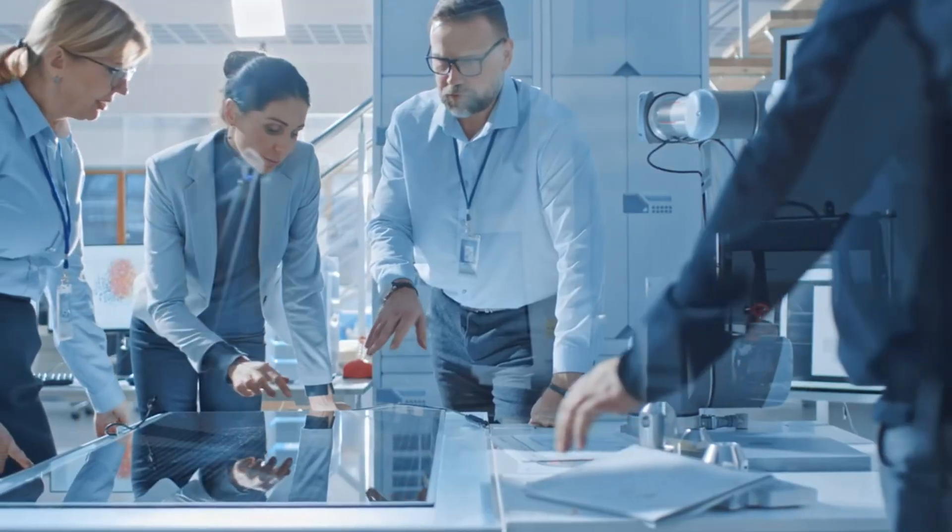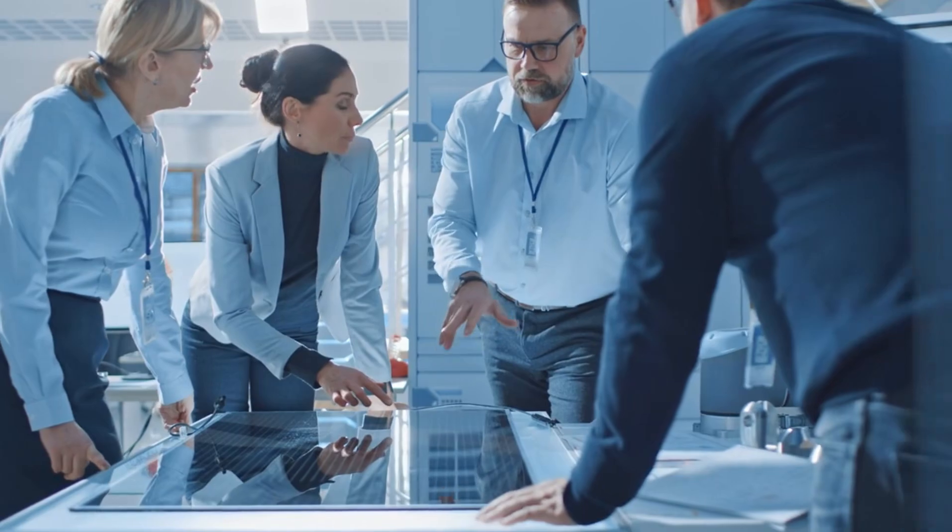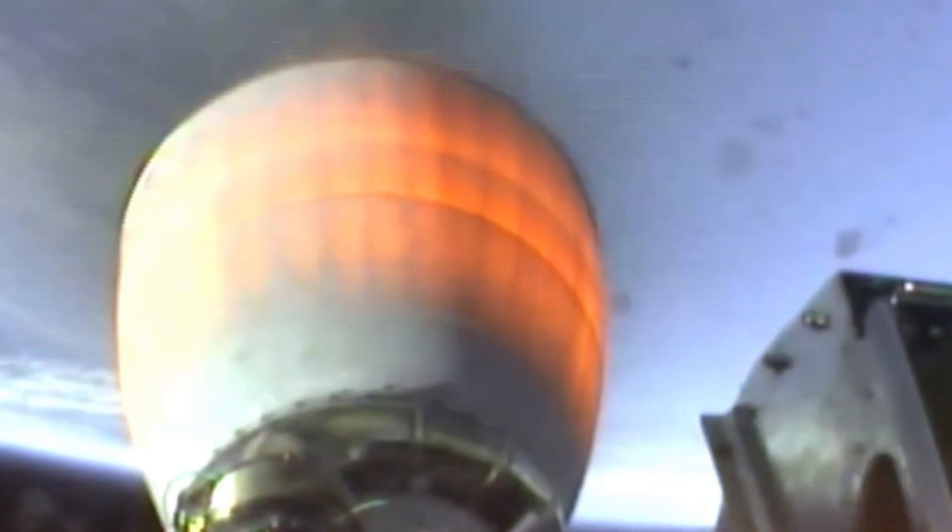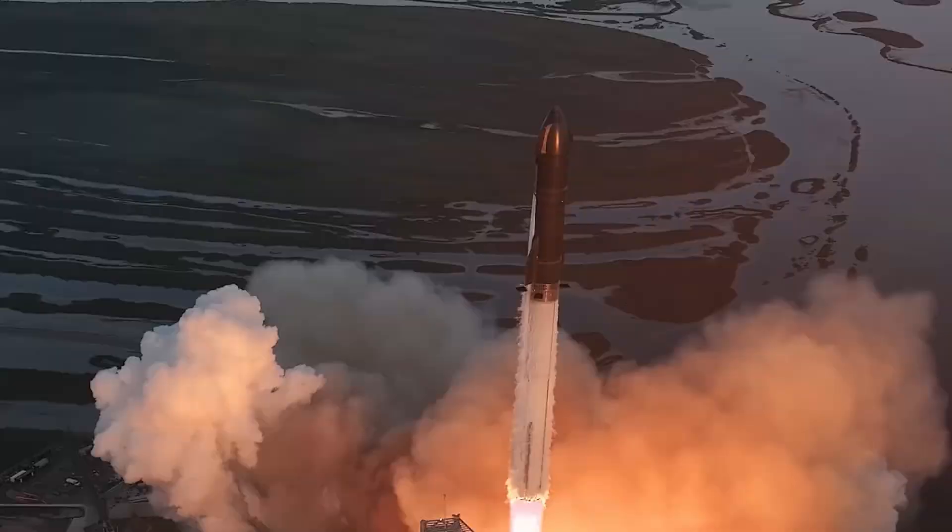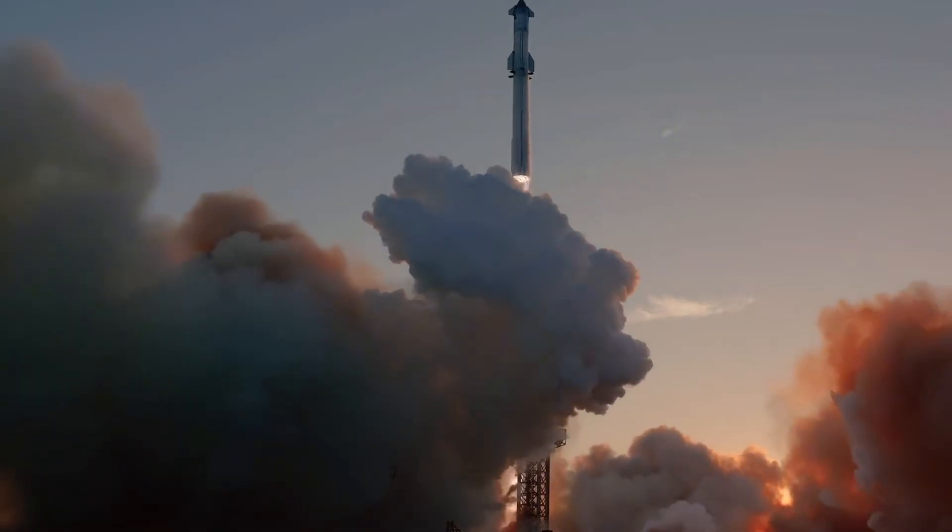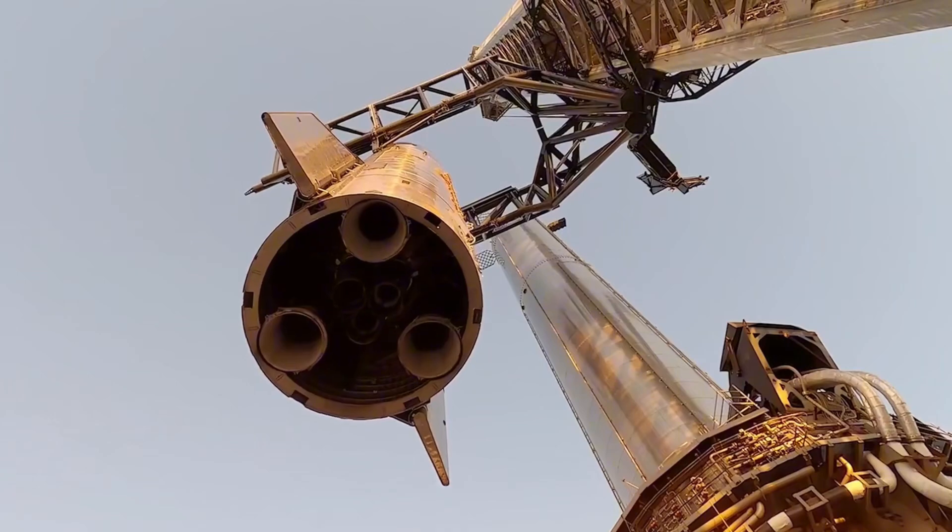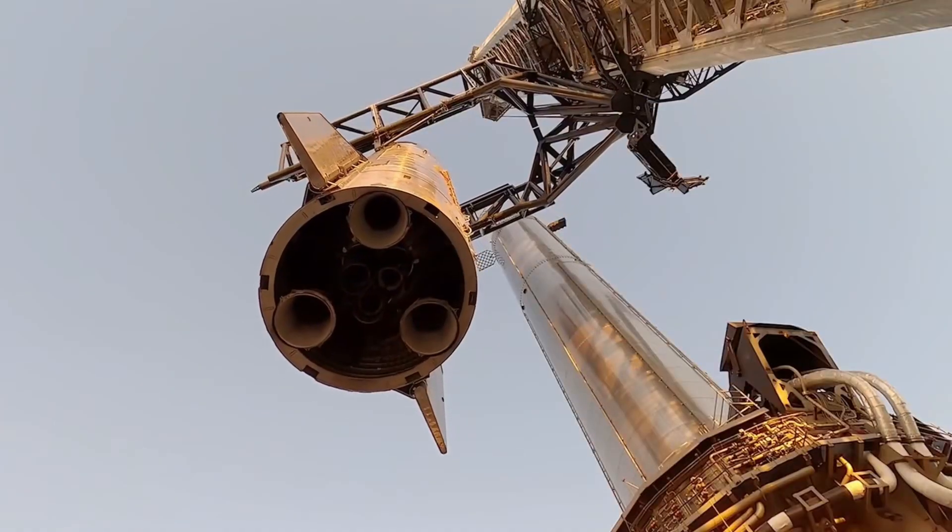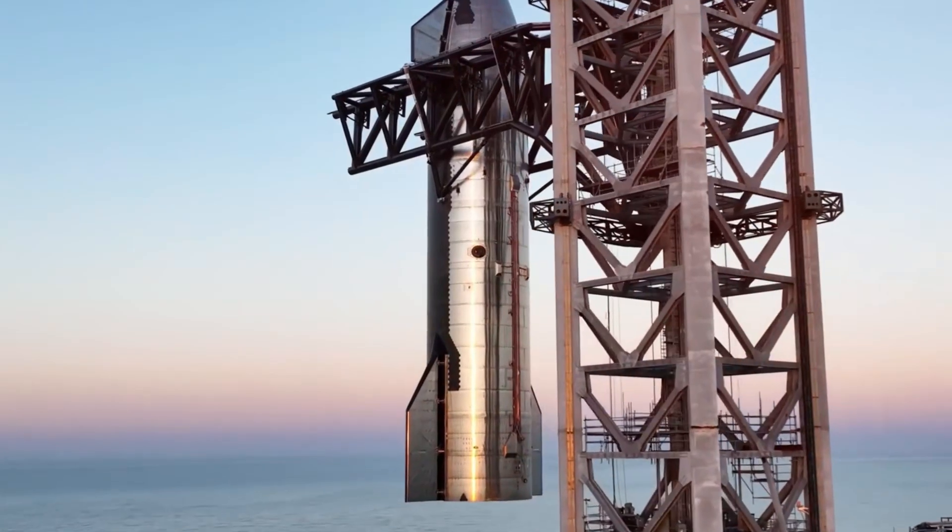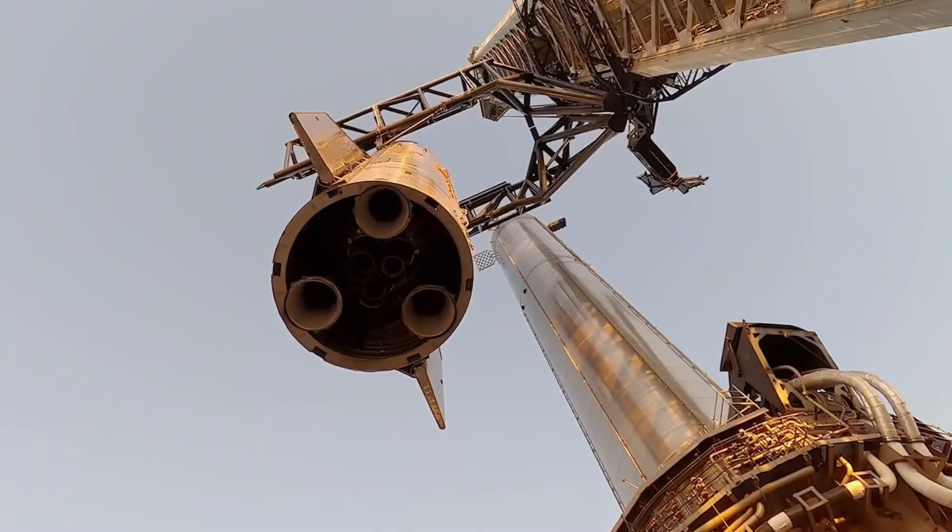The journey of simplifying rocket engine design began with a bold challenge. When SpaceX engineers first tackled the Raptor engine project, they faced a landscape dominated by traditional engines that looked like intricate Christmas trees: complex networks of external pipes, valves, and sensors wrapped around massive combustion chambers. Every component visible, every flow path exposed, creating a mechanical jungle that was both impressive and intimidating.